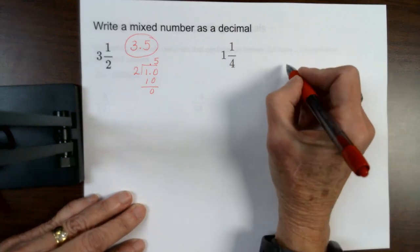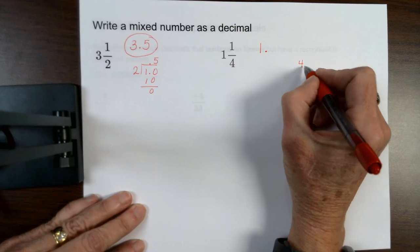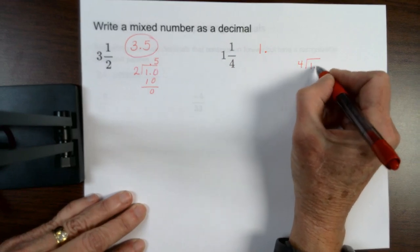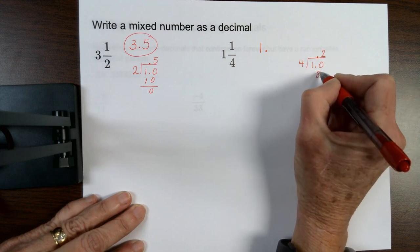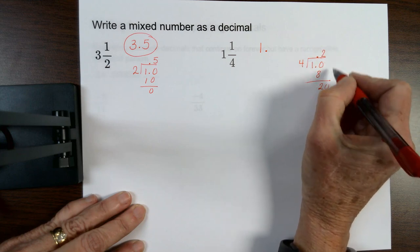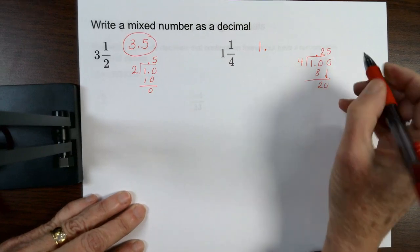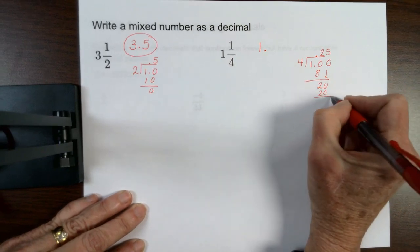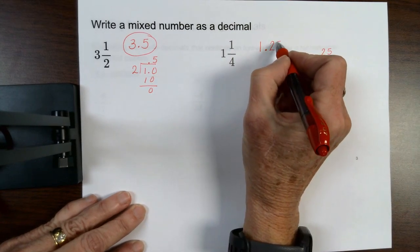Same thing here. I've got 1, and then I've got to find the decimal value. 4 goes into 1. Add a decimal and a 0. 2 times. Subtract. Add a 0. Bring it down. And then it goes evenly right there. So this is going to be 1.25.